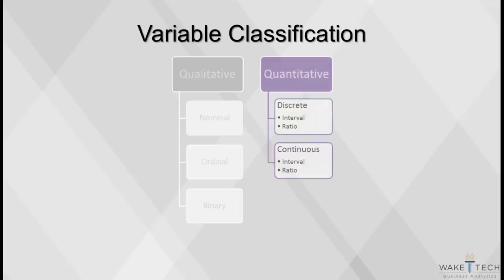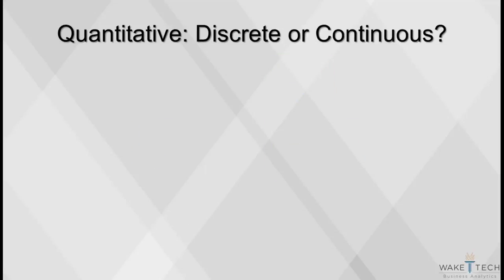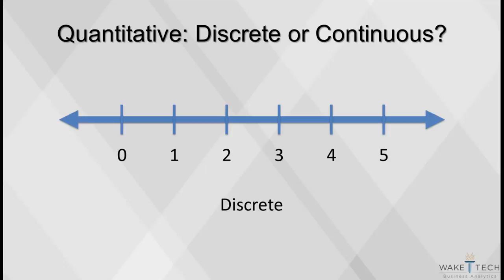We will now discuss quantitative variables in detail. Quantitative variables are those for which the recorded numbers encode magnitude information based on a true quantitative scale. They can be discrete or continuous. A discrete variable has only whole number counts. A continuous variable can take on any value on the number scale.